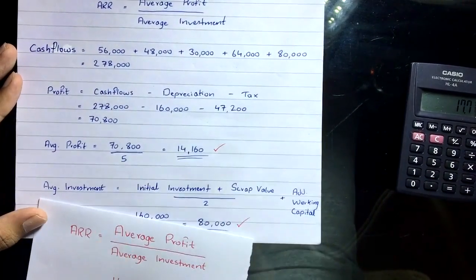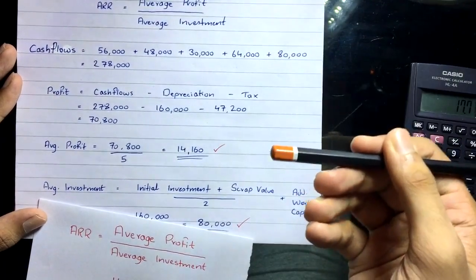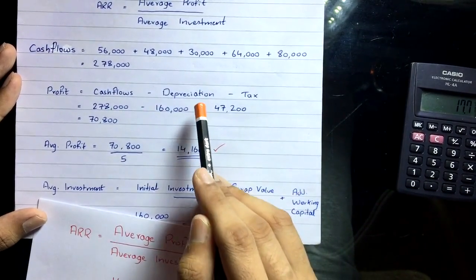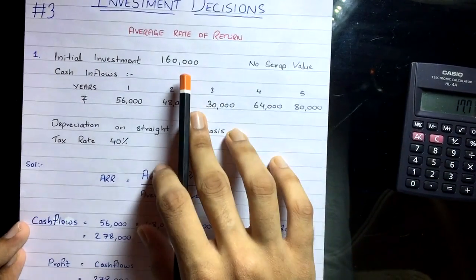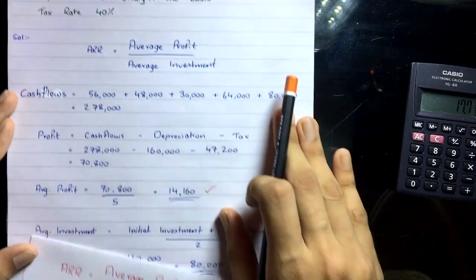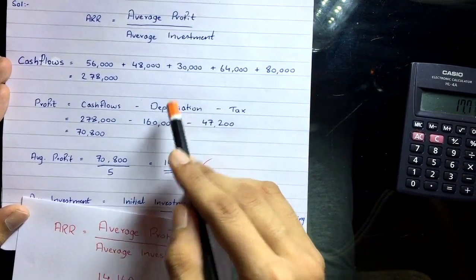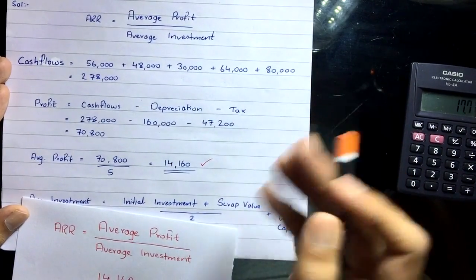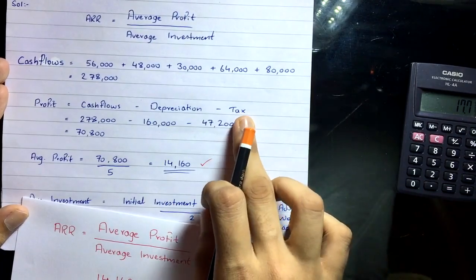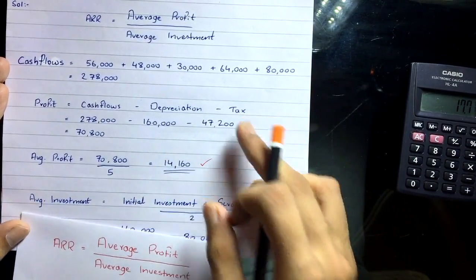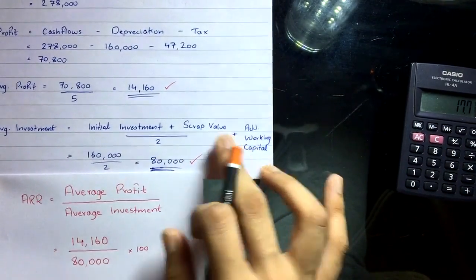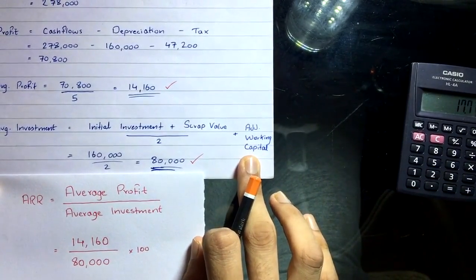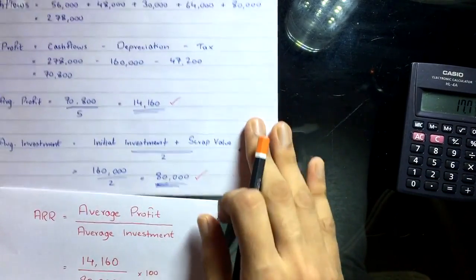To recap the steps: add up all cash inflows; calculate total depreciation (cost minus scrap value — if no scrap value, use the full cost); compute tax on the residual value after depreciation; subtract depreciation and tax from total cash inflows to get total profit; divide by years for average profit. For average investment: (Initial Investment + Scrap Value) / 2, then add additional working capital if any.